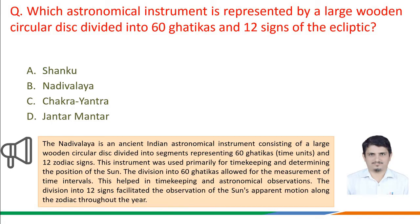Here we may recall the Nadiwalaya is an ancient Indian Astronomical Instrument consisting of a large wooden circular disc divided into segments representing 60 Gattikas, i.e. time units, and 12 zodiac signs. This instrument was used primarily for time keeping and determining the position of the sun. The division into 60 Gattikas allowed for measurement of time intervals, and the division into 12 signs facilitated observation of the sun's apparent motion along the zodiac throughout the year.